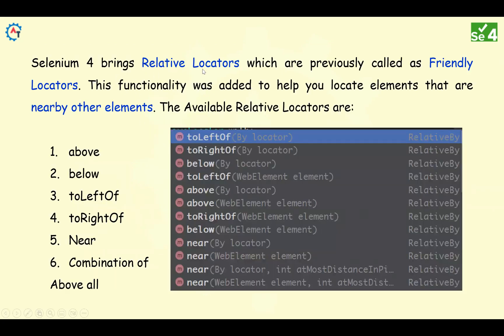Selenium 4 brings relative locators which were previously called friendly locators. They renamed it to relative locators, but previously we used to call them friendly locators. This functionality was added to help you locate elements that are nearby other elements.